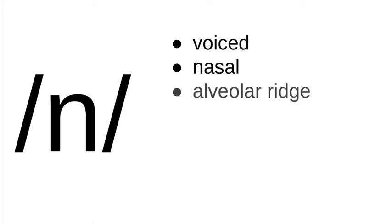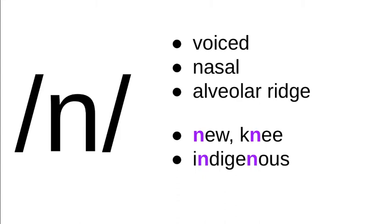Next sound up is the lowercase n for the n sound. This sound is voiced and it is nasal, meaning that air is flowing through the nose as you produce the n sound. That's why when you plug your nose it starts to sound funny because it's not working right. And again this, like all the other ones in this video, is made at the alveolar ridge. Some words in English that have the n sound: new, knee, indigenous, loon, when.